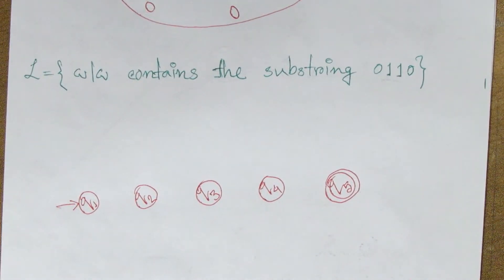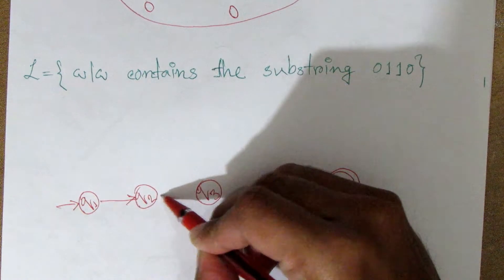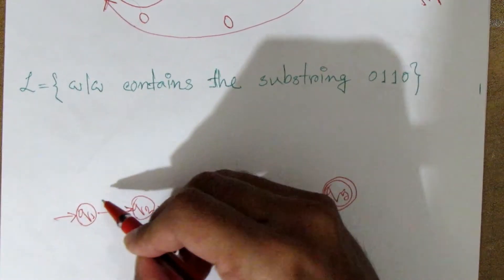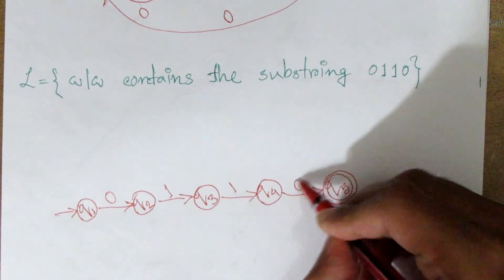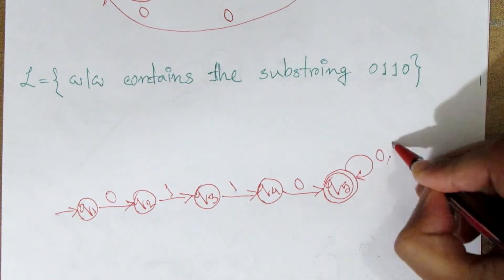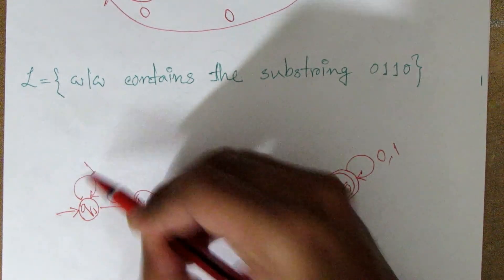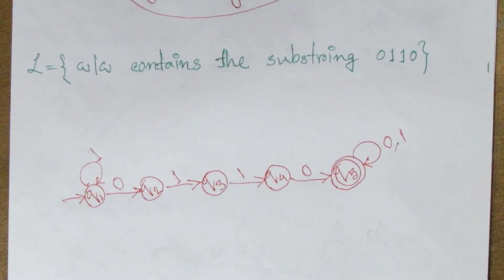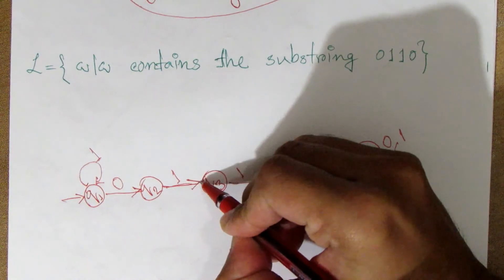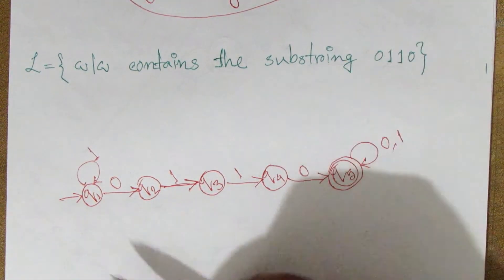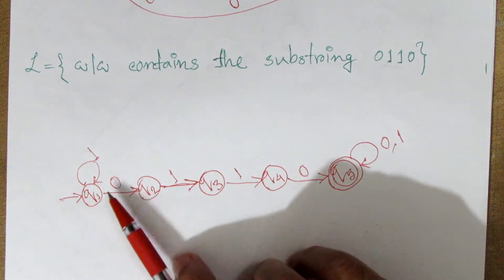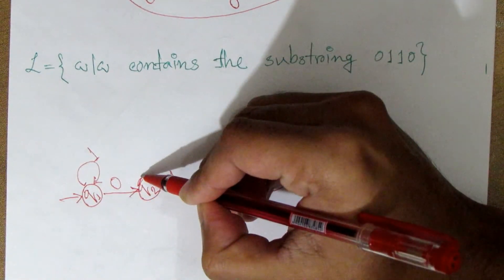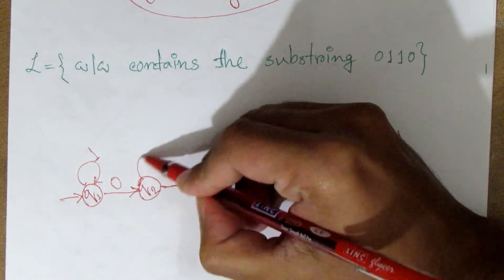So let's see how we can do the transition. We can do the substring 0, 1, 1, 0. We can do the problem with the substring. So this is complete — here we have the correct object. Then we can do the substring, so there is no problem.